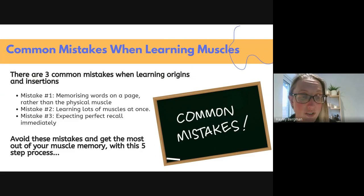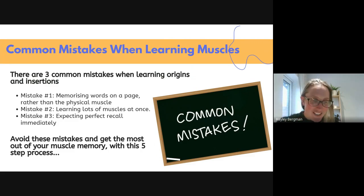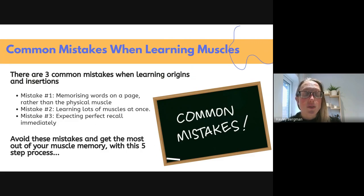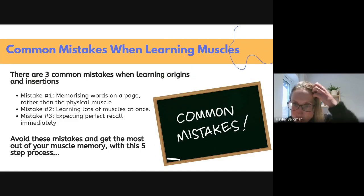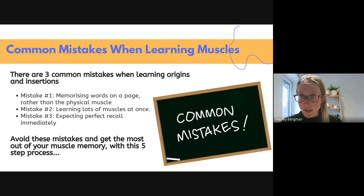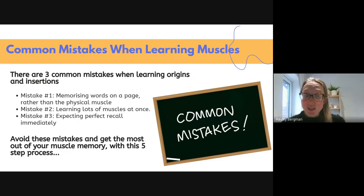Mistake number three is expecting perfect recall immediately. Someone learns one or two muscles, goes to bed, wakes up in the morning and expects to know it all. But they don't test themselves in an exam-based scenario with mock questions or multiple choice with context. Instead they ask themselves open-endedly what they remember, which gives the brain no context to pull from for recall. That makes you feel like a failure and you end up in a downward spiral thinking you can't learn muscles.